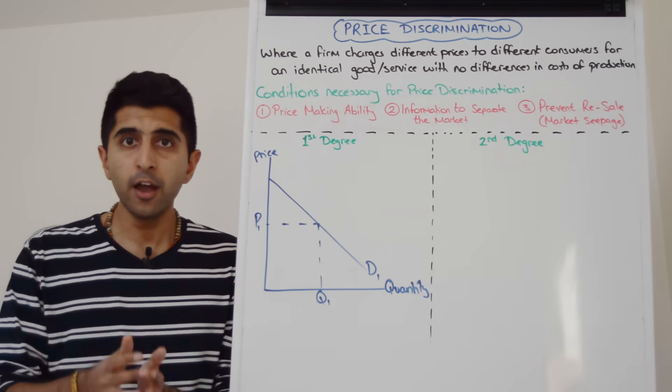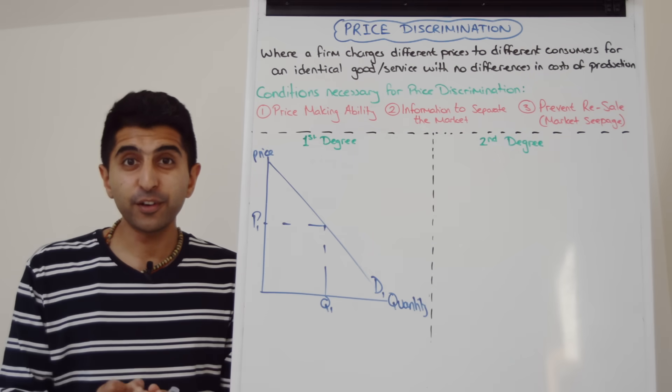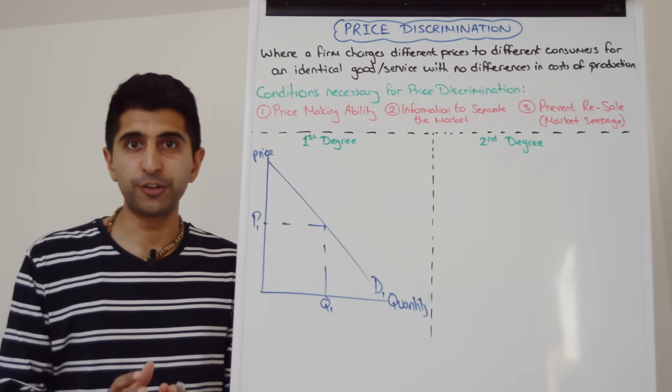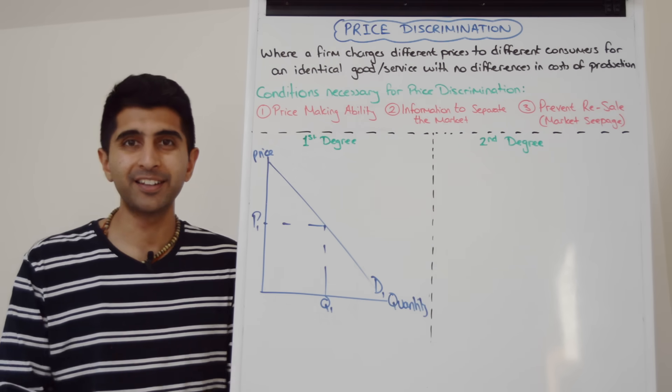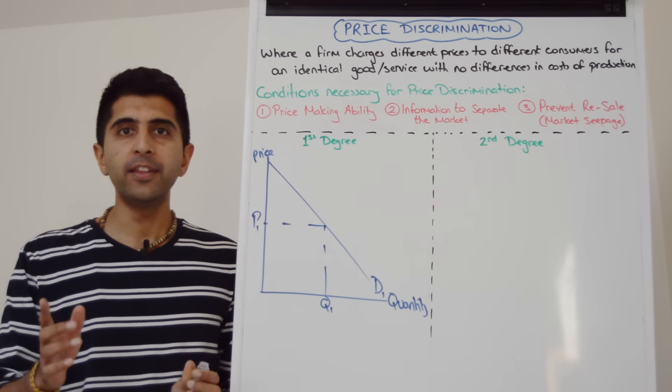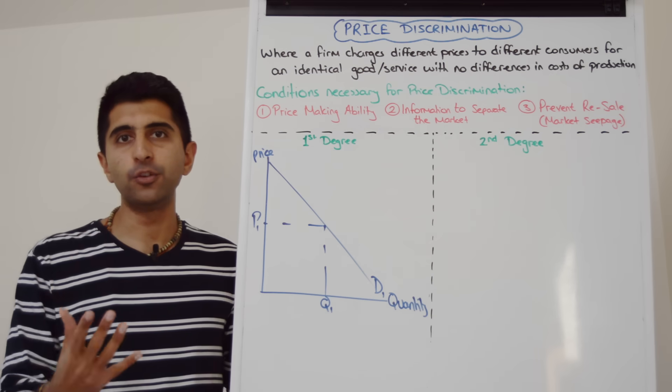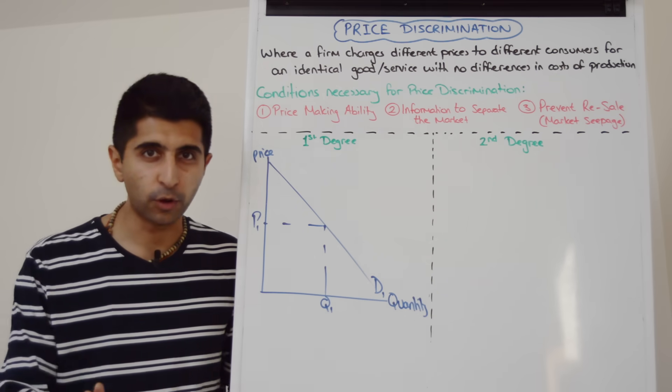There are three different degrees of price discrimination. Let's look at the first degree. First degree price discrimination is really dodgy. It occurs when consumers are charged the exact price they are willing and able to pay for a good or service, therefore eroding all consumer surplus in the market and turning it into monopoly profit. Really, really dodgy stuff here.